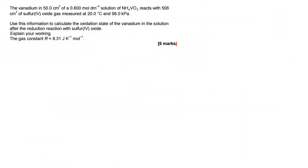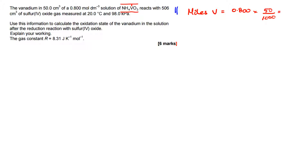Here's the exam question with working space. Starting with vanadium: from ammonium vanadate you have one mole of vanadium per mole of compound. So moles of vanadium = concentration × volume = 0.800 × (50/1000) dm³, which gives 4 × 10⁻² moles.